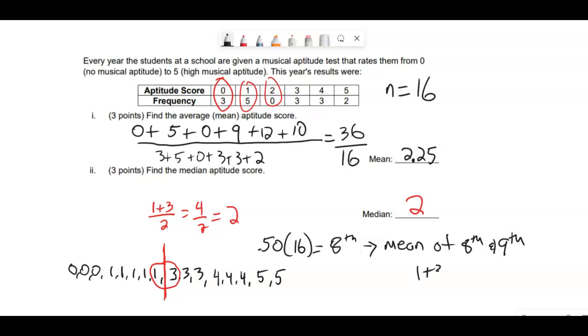And the eighth and the ninth are the one and the three. Same result, finding the mean of the eighth and the ninth term, giving us two. All right, I hope this helps.